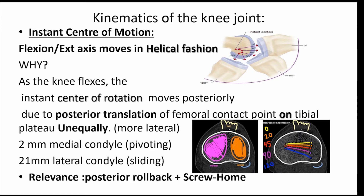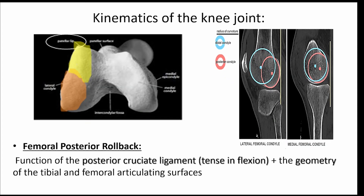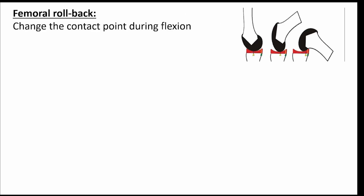These two phenomena are posterior rollback and the screw-home mechanism. Posterior rollback of the femur is a function of the posterior cruciate ligament, which is tense during flexion, and also the geometry of both the tibial and femoral articulating surfaces. Femoral rollback is defined as the change in contact points between the femur and tibia during flexion due to combined rolling and sliding.